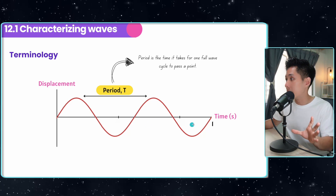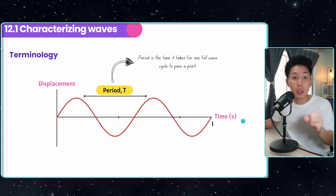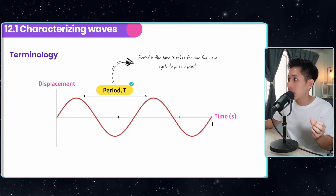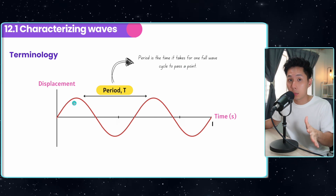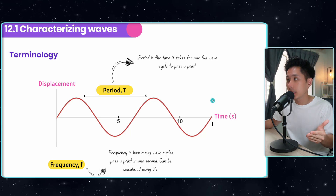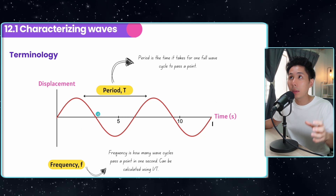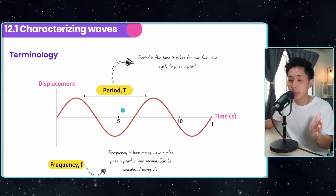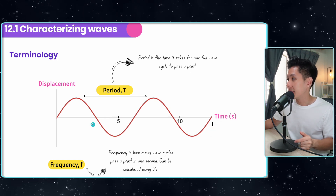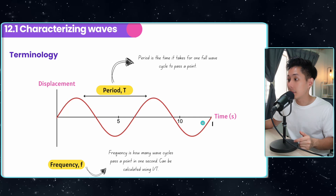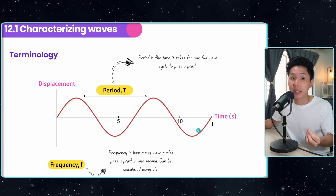If we stretch the graph so the x-axis represents time, we get two more terms. The first is period: how long it takes for one complete wave to pass through a point. The second is frequency, which I'll show you is interrelated with period. Frequency tells you how many waves pass through a certain point in one second. For example, this graph has a frequency of two because two complete waves pass through a point in one second.